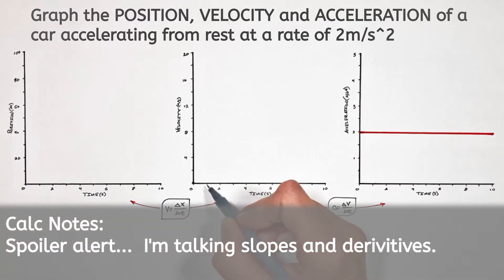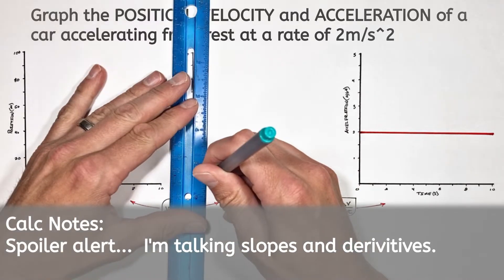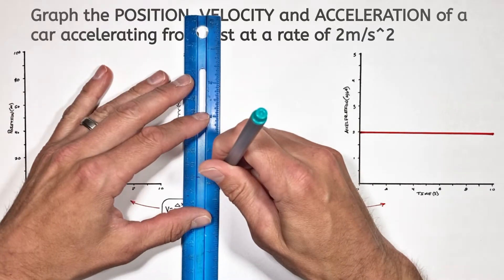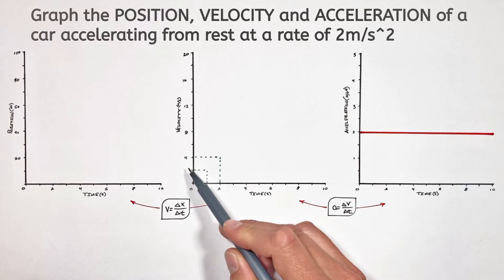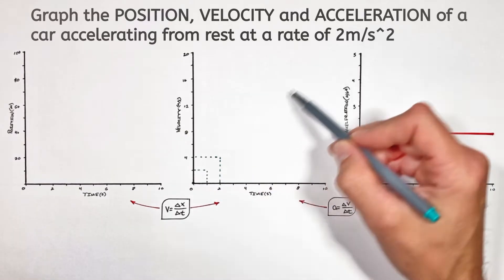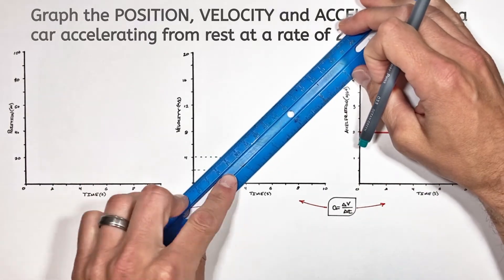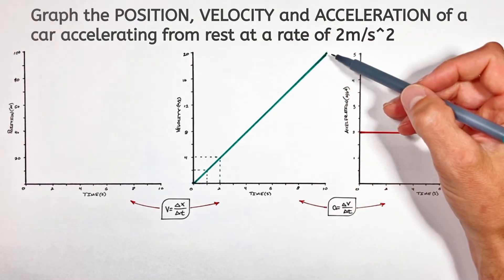So after 1 second, the velocity is going to be 2 meters per second. And after 2 seconds, the velocity is going to be 4 meters per second. And with every second that goes on, that velocity is going to increase by another 2 meters per second. So after 10 seconds, the car is actually traveling at 20 meters per second.